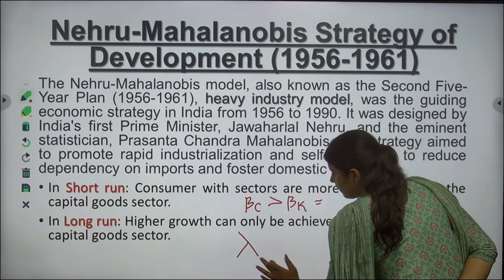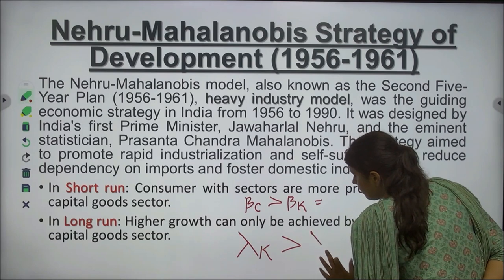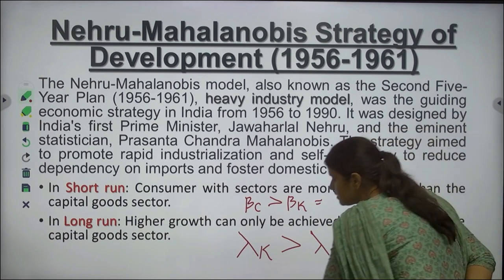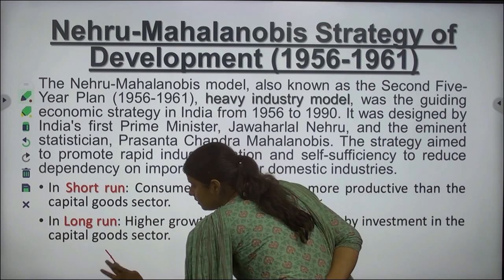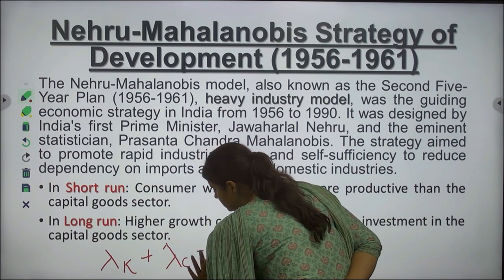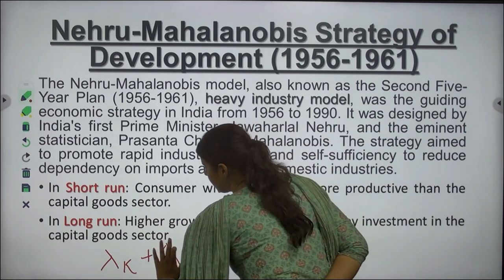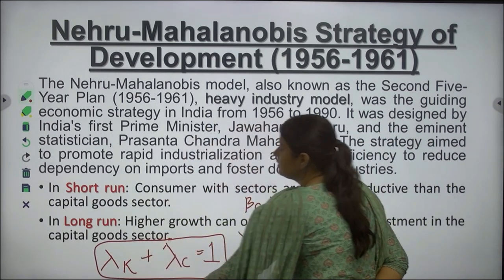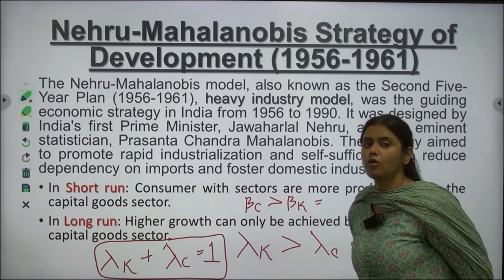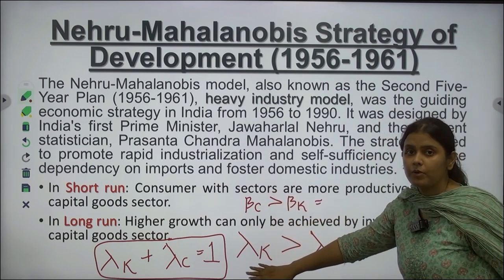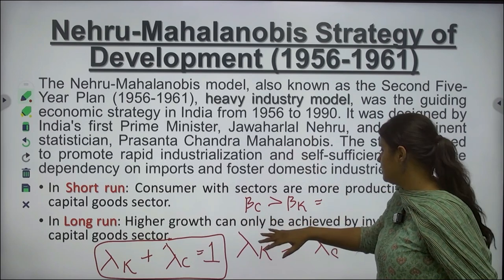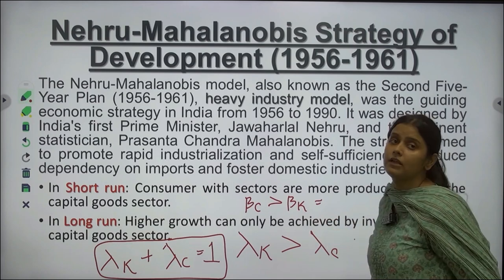Whereas in the long run, lambda K (investment in capital goods) should be greater than lambda C (investment in consumer goods). Normally, lambda K plus lambda C equals 1, meaning we need to invest in both capital and consumer goods for economic growth. But in the long run, investment in capital goods should be more than in consumer goods, while in the short run the Mahalanobis model emphasizes that investment in consumer goods should be more.